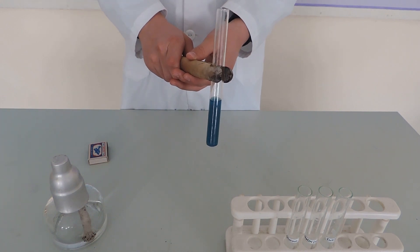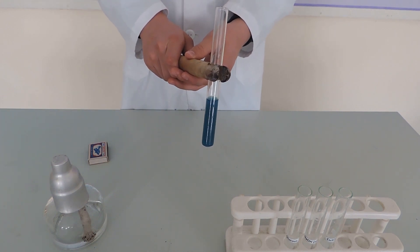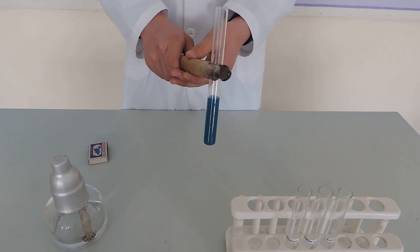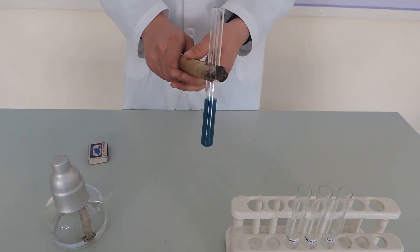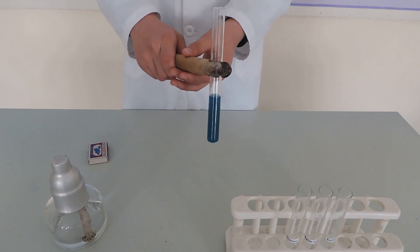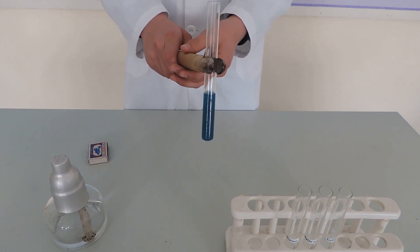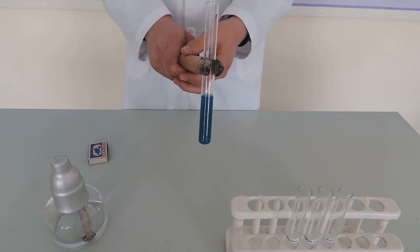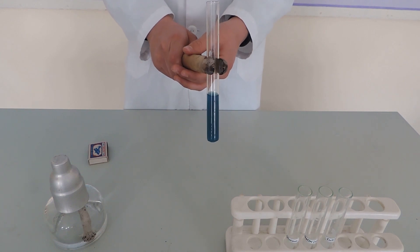Copper sulfate and sodium hydroxide form the insoluble copper-2-hydroxide, but precipitate didn't form. This means that glucose shows the properties of polyhydric alcohols and dissolves copper-2-hydroxide.